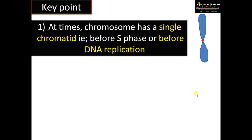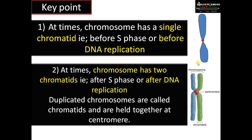The most important concept in solving these is that a chromosome has a single chromatid before DNA replication, that is before the synthetic phase of the cell cycle. After DNA replication, a chromosome has two chromatids. Duplicated chromosomes are called chromatids and are held together at the centromere.